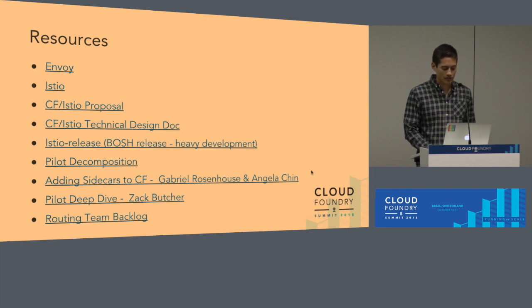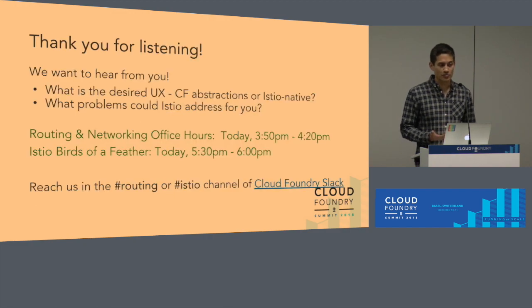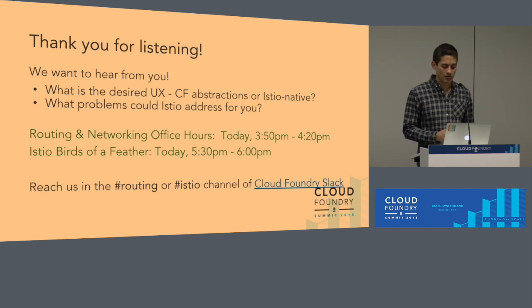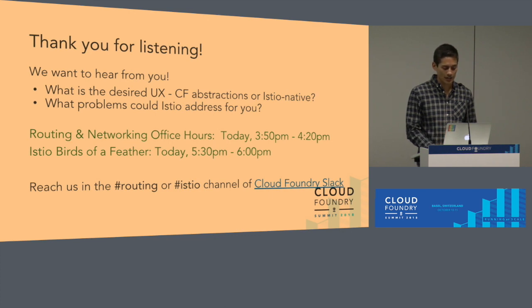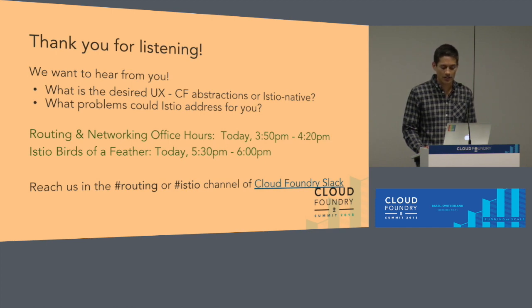Here is a list of resources referenced in the talk. The slides are uploaded, so feel free to take a look. We want to hear from you — the UX example I showed uses API endpoints, which is not ideal, and we're curious to hear what you think the provided UX should be: something similar to CF CLI, or would you prefer to use Istio native configs? We'd also love to hear what sort of problems Istio could address for you. We have a routing and networking office hours today at 3:50, an Istio birds-of-a-feather session at 5:30, and you can always reach us in the routing or Istio channel in Cloud Foundry Slack.